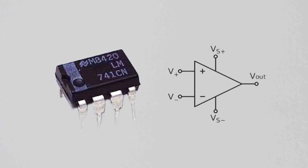Symbols and terminals: the symbol for an op-amp typically consists of a triangle representing the amplifier, with two input terminals — inverting and non-inverting — as well as an output terminal. Differential inputs: op-amps have two input terminals, inverting (minus) and non-inverting (plus), and the output voltage is proportional to the voltage difference between these two inputs. High input impedance: op-amps typically have very high input impedance, meaning they draw minimal current from the input source. Low output impedance: op-amps typically have low output impedance, allowing them to drive loads without significantly affecting the output voltage.